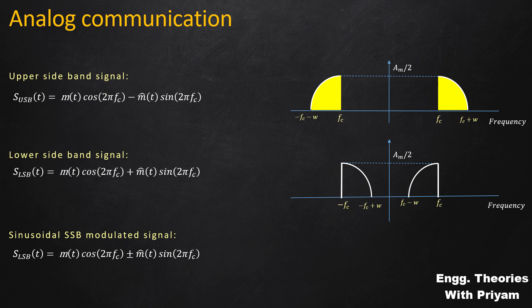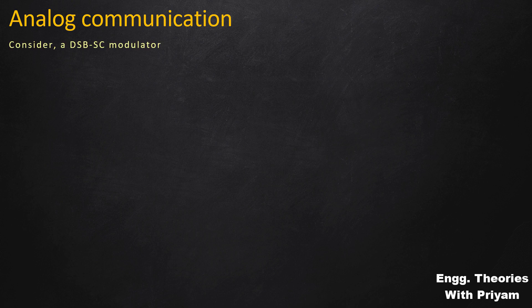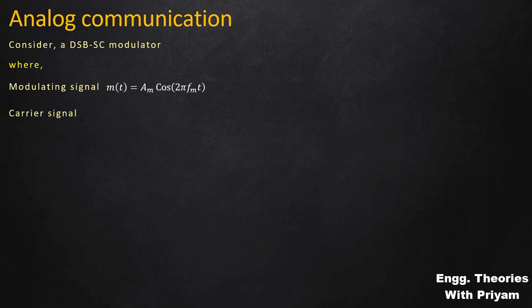In this lecture, we will see how to generate the SSBSC modulated signal by using a DSBSC modulated signal. First, we derive the expression for the DSBSC modulated signal using a DSBSC modulator. We have seen DSBSC generation before, but here we give a mathematical explanation. Consider a DSBSC modulator with modulating signal m(t) = Am·cos(2π·fm·t) and carrier signal c(t) = Ac·cos(2π·fc·t).